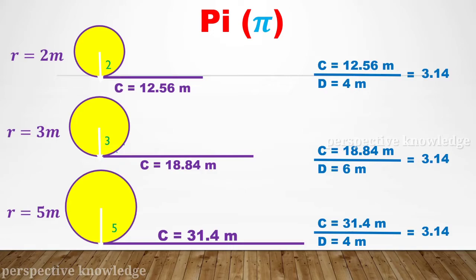Now we are going to find the C divided by D ratio — that is the circumference divided by the diameter of the circle. We already know the radius. The diameter is radius multiplied by 2. First, we are going to find the C by D ratio. If the circumference is 12.56m and the diameter with radius 2 is equal to 4m, then dividing the circumference by the diameter gives us 3.14.